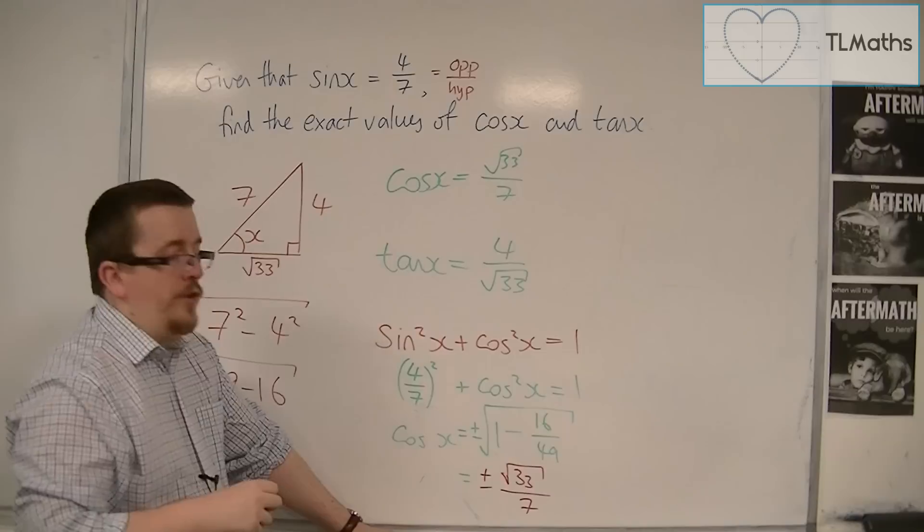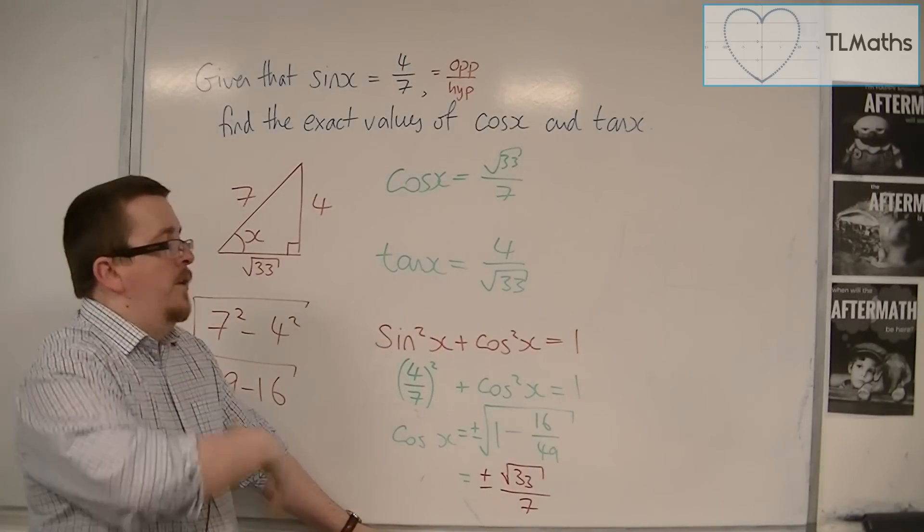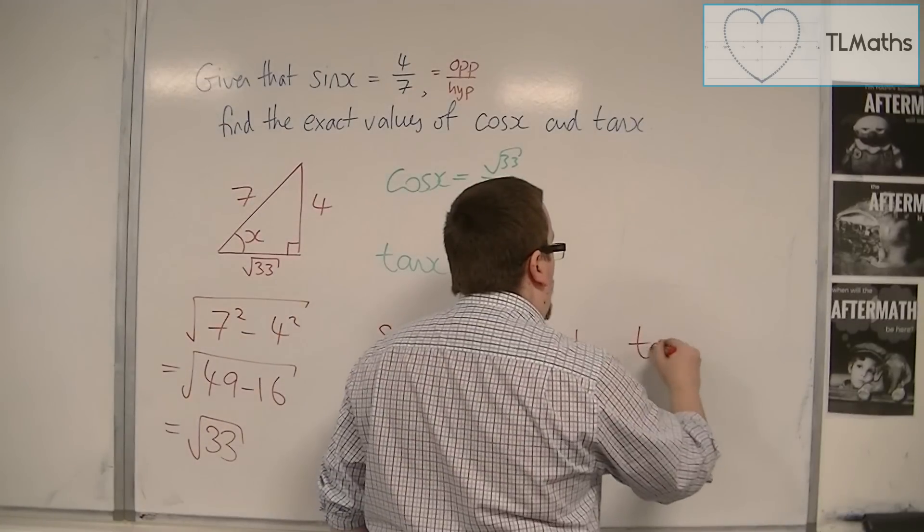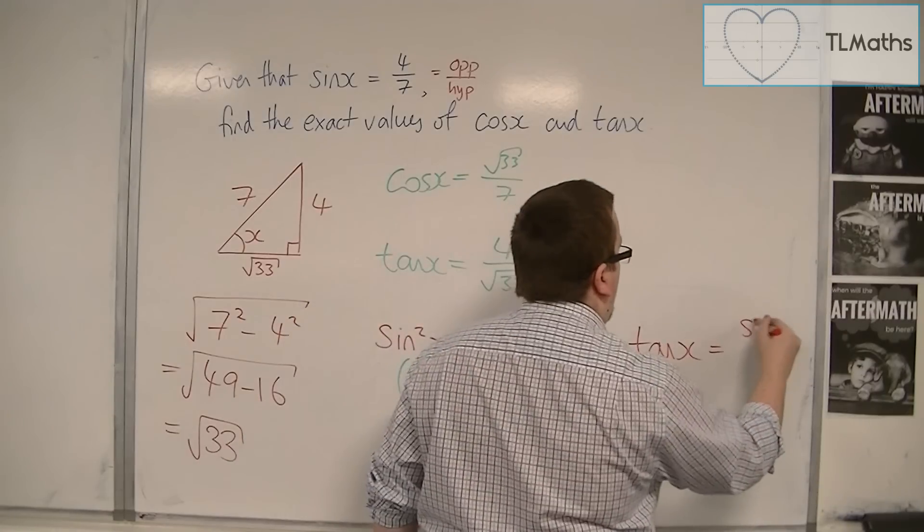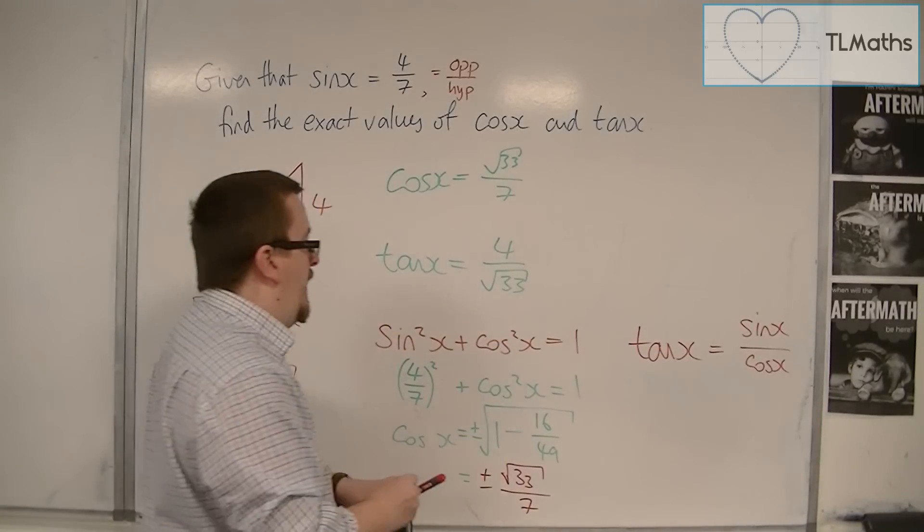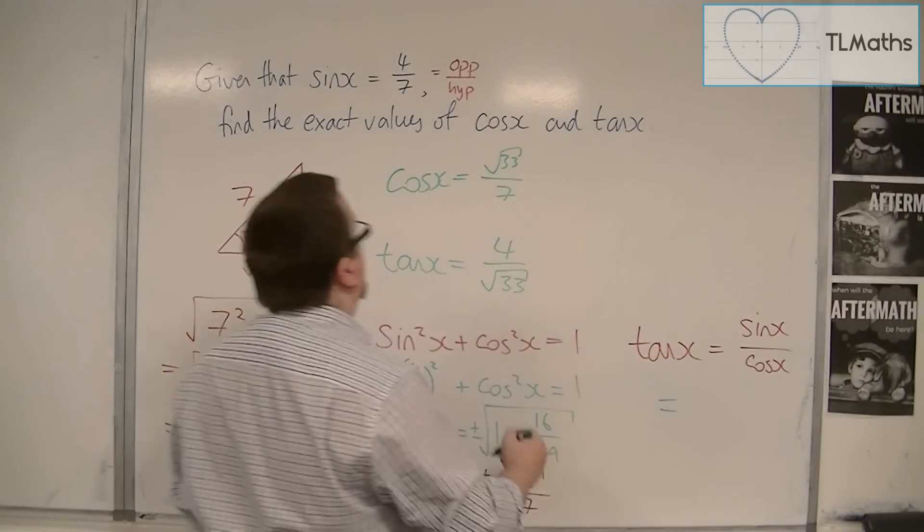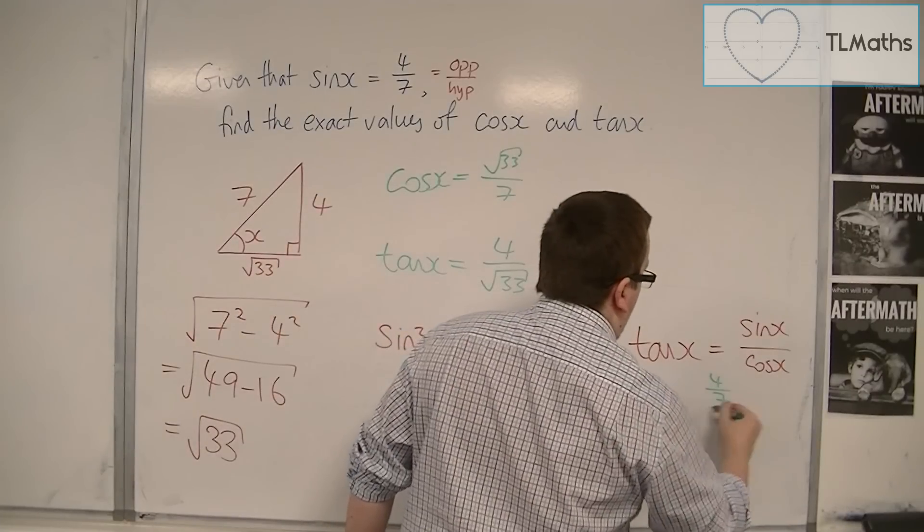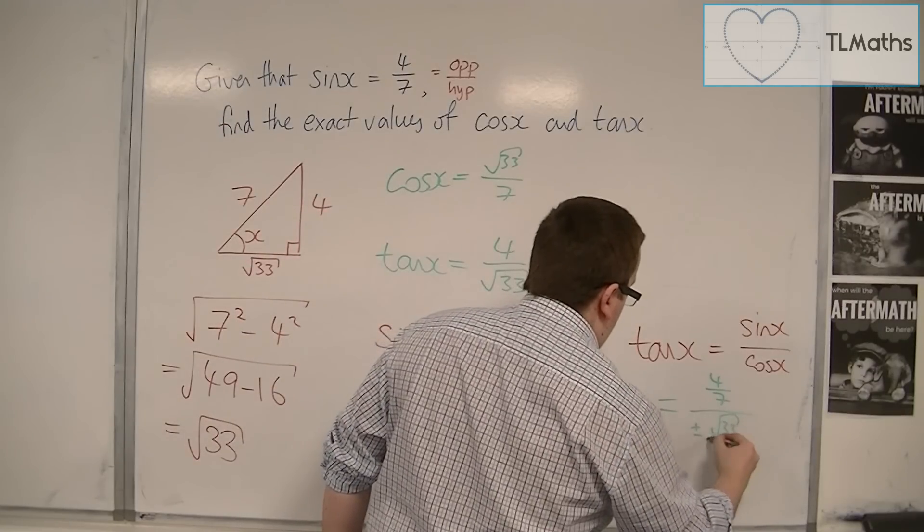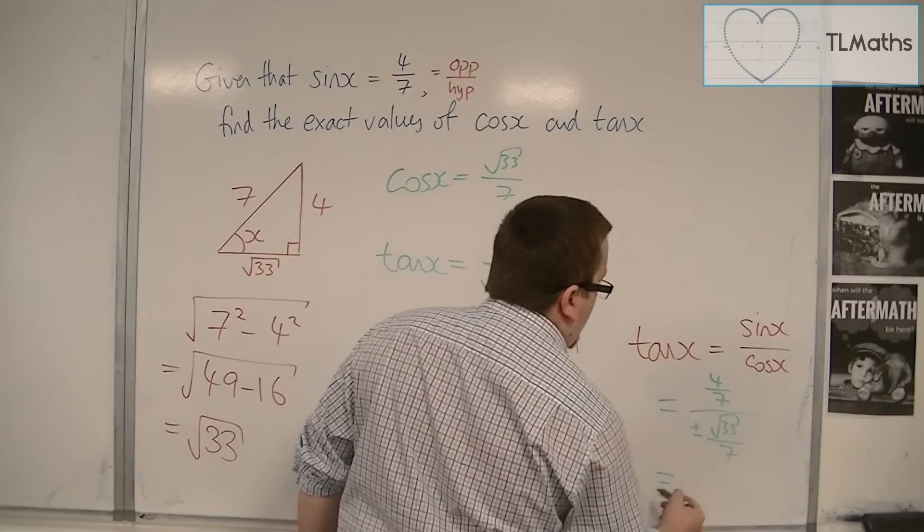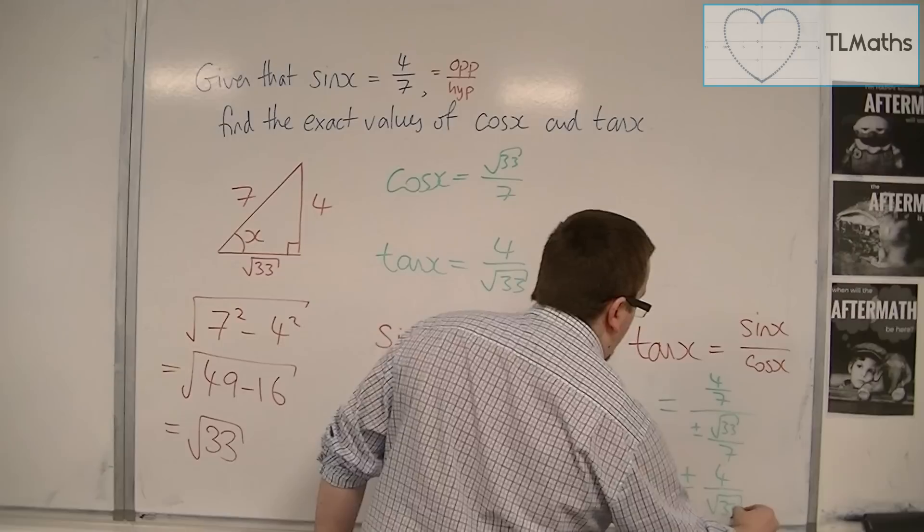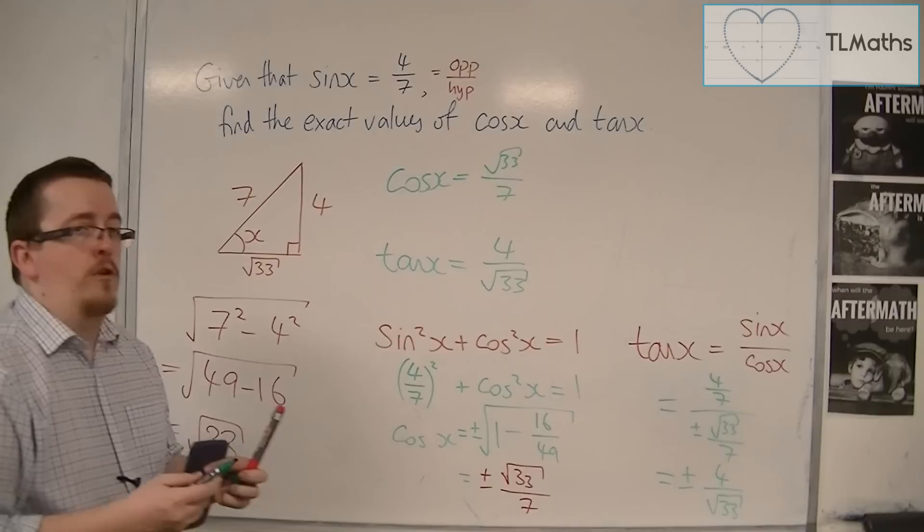So, there are actually two solutions to cosine. And subsequently, with another trig identity that we learn later on, which is tan(x) is sin(x) over cos(x). If you know what sin(x) is, and you know what cos(x) is, which we do, sin(x) is 4 over 7, and cos(x) is plus or minus root 33 over 7. That means tan(x) is plus or minus 4 over root 33. Not just the positive 4 over root 33.